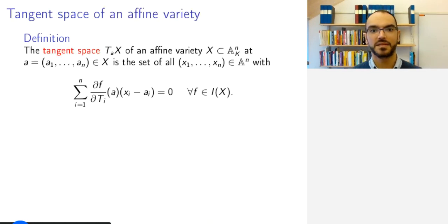Then we can define the tangent space of an affine variety. So, we're now requiring that we have an affine variety that is embedded in an explicit way into affine space over the field k, that we always assume is algebraically closed, even though for this definition this is not yet important.